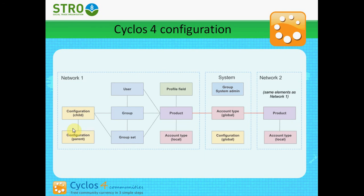For example, if we set the default country to be England in the parent configuration, the default country in the child configuration will also be England. But we can change some other values, and the values we change will not be the same as the parent values. The values that remain unchanged will just inherit the values from the parent configuration.